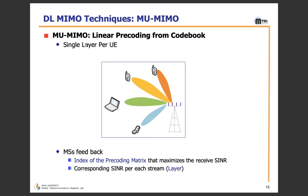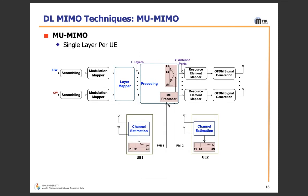Now moving to MU-MIMO — Multi-User Multiple Input Multiple Output. In MU-MIMO, each UE is given a separate layer, so multiple UEs are served simultaneously. Because multiple UEs are served, there is more capacity. The UEs feed back to the network using the PMI (Precoding Matrix Index), which helps maximize the receiver SINR and the corresponding SINR per stream.